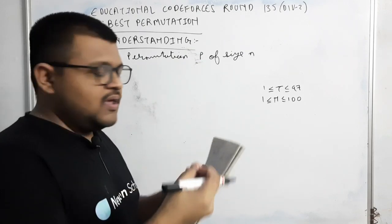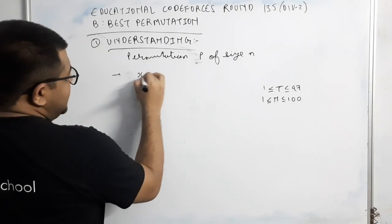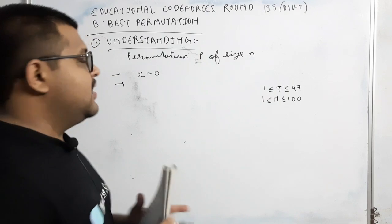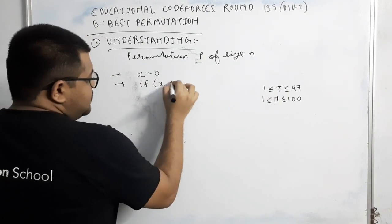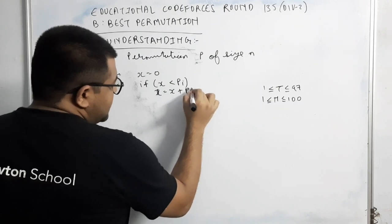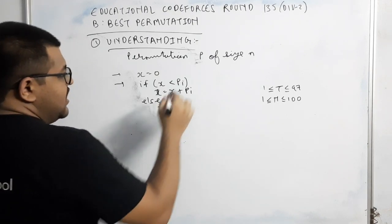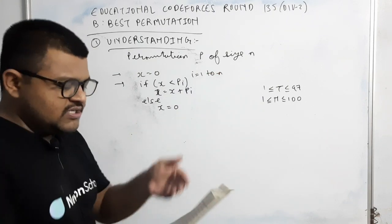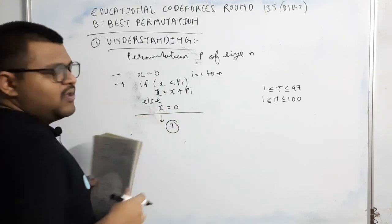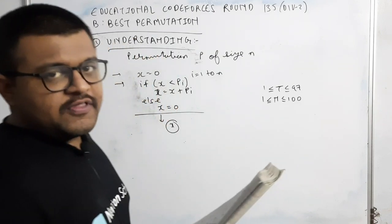तो इस permutation की value कैसे define होगी? अगर हमें एक permutation की value निकालनी है, तो वो है कि initially एक integer x होगा, जिसकी value हम 0 रखेंगे. फिर हम i equal to 1 से लेके n तक traverse करेंगे. अगर किसी point पे if x is less than pi, तो उस step पे हम x की value में pi को add कर देंगे. अगर x is greater than equal to pi हुआ, मतलब else, तो x की value को 0 कर देंगे. यह loop हम i equal to 1 to n run करेंगे.